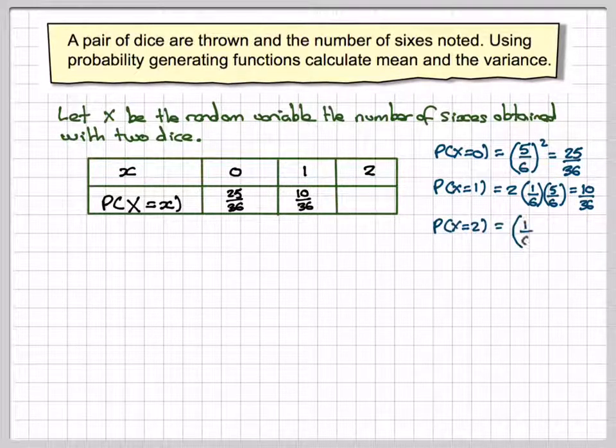And the probability of having two sixes is going to be 1/6 squared, which is 1 out of 36.